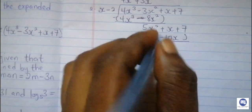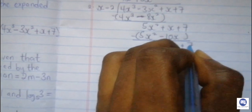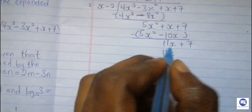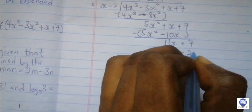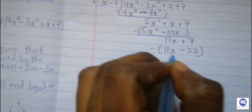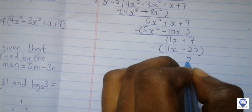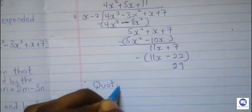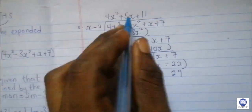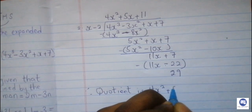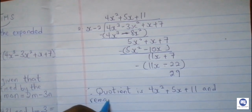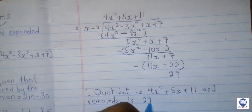Now we have 5x² divided by x, which is positive 5x. Then x times 5x is 5x², and negative 2 times 5x is negative 10x. We subtract, and continuing the process we arrive at 29x. So the quotient is 4x² plus 5x plus 11, and the remainder is 29.